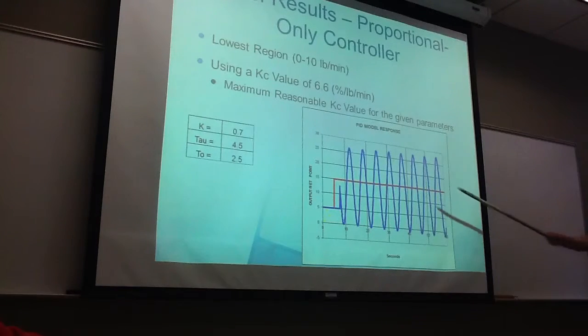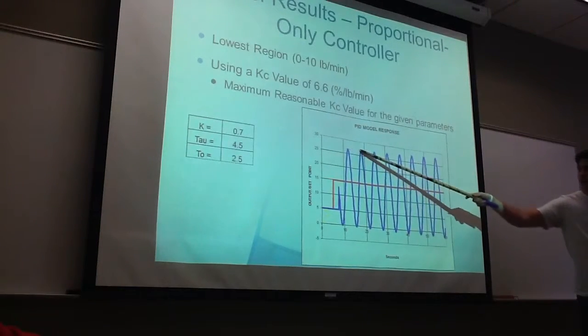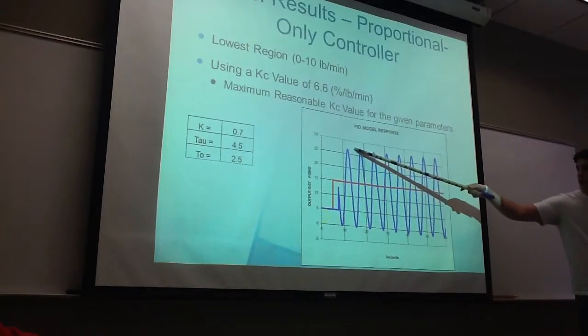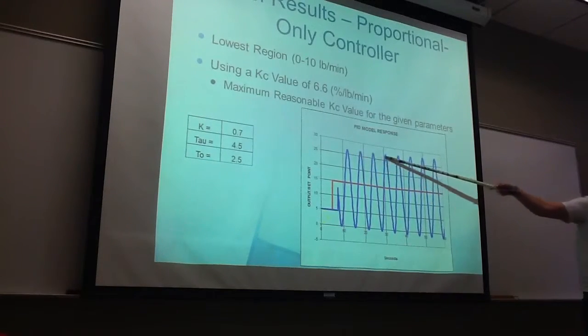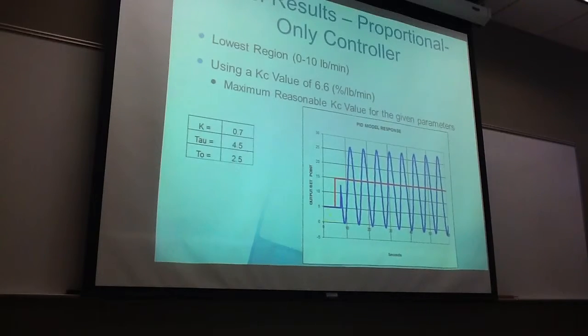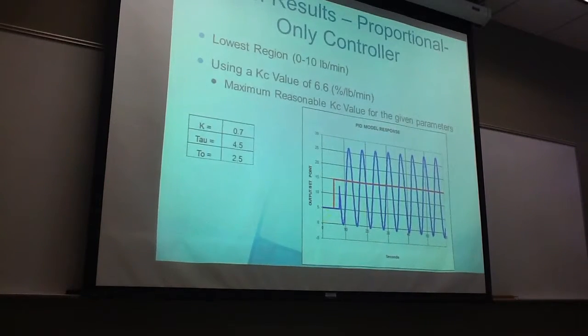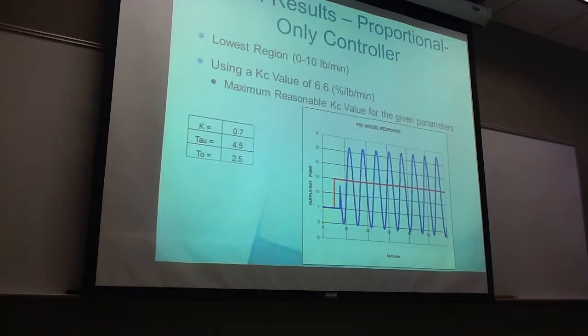And this is what we came up with. As you can see right here, these are pretty level, but it has a slight rise, which means our decay ratio is slightly above 1 for this particular graph.